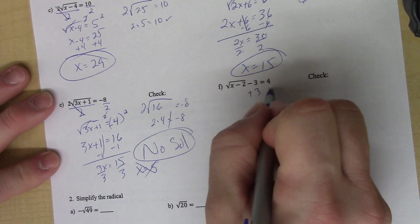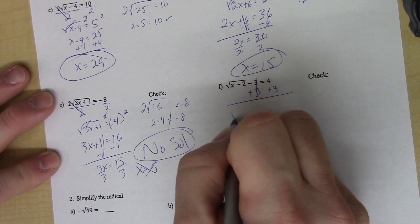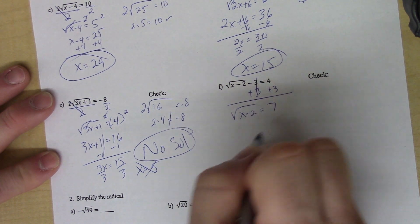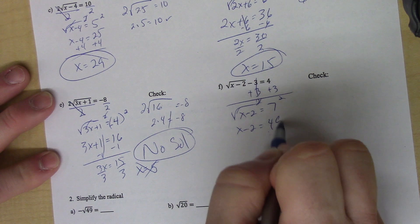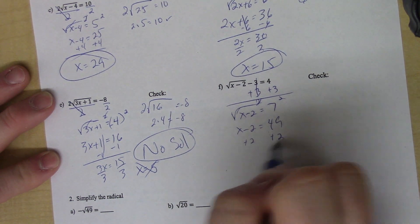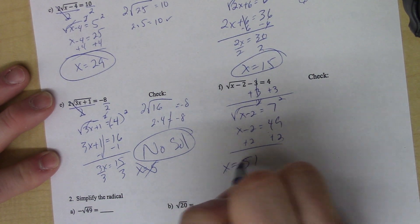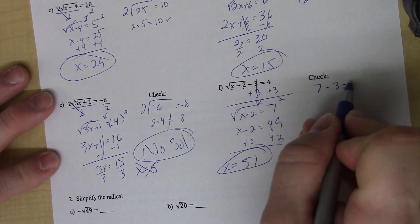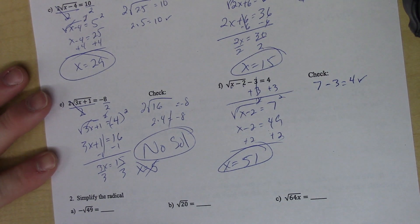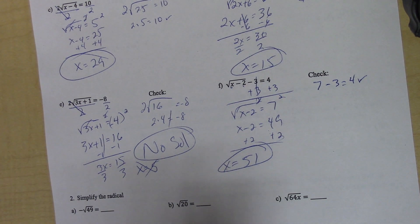Plus 3 here. Those cancel. Again, square both sides. x minus 2 equals 49. And I add 2 to both sides to get 51. Again, I go to check it. 51 minus 2 is 49. And the square root of 49 is 7 minus 3. Yes, indeed. That equals 4. So, the reason we're doing this is to kind of get into what we are doing today, which I will give you on the other video.